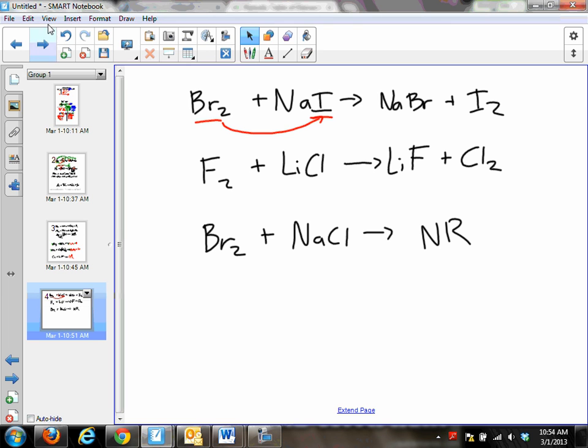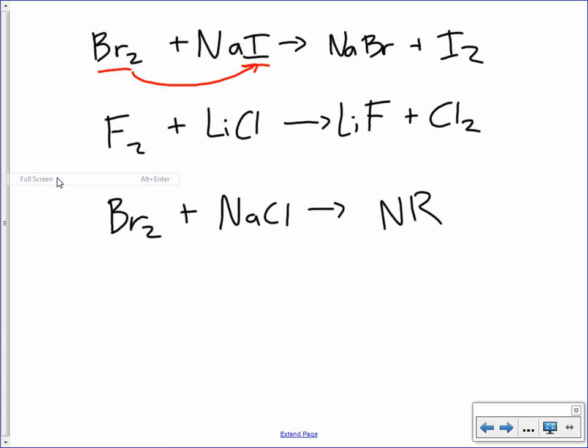So, if we go back to our reaction, bromine replaced iodine up here. It makes sense because it's more active. Fluorine was able to replace chlorine because it's higher on the table. Bromine was not able to replace chlorine because chlorine is higher. So, the rules really work the same as the metals. The only difference is, instead of having an activity series that you have to go by, you can just look at the periodic table and see which ones are higher.